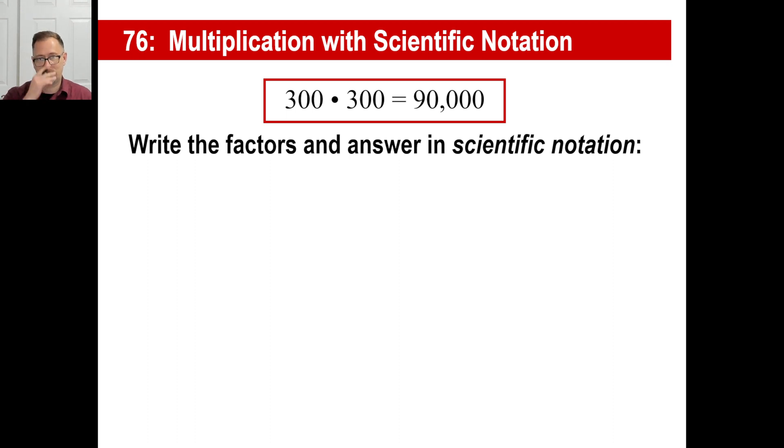Here's another one. 300 times 300 is 90,000. We just did that, right? So how do you write 300 in scientific notation? You're going to go 3 times 10 to the 2nd and times, again, 3 times 10 to the 2nd. That's going to equal 90,000 in scientific notation. The decimal is right here, right? So 1, 2, 3, 4. 9 times 10 to the 4th. Now look at that for a second. Interesting, huh? Let's do one final one.